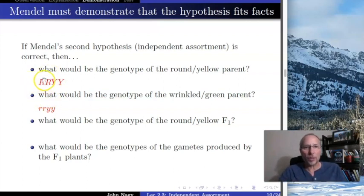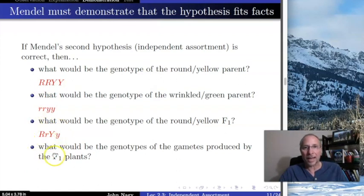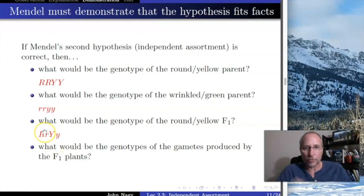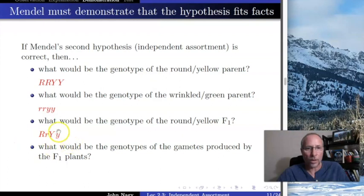Following the same rule, each individual is only going to give one particle for each trait. This round yellow individual for seed shape only gives a big R, and can only give a big Y. The wrinkled green parent contributes a gamete that is little r little y. So the offspring must have big R and little r from those two parents for shape, and big Y and little y for color — making it big R little r big Y little y, which makes it a dihybrid — heterozygous in two traits.